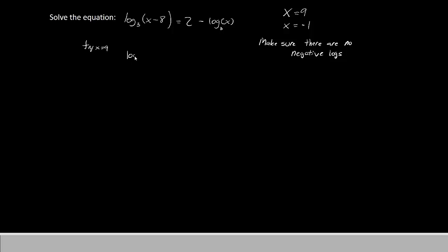So let's try 9. We'll let x equal 9. Log base 3 of 9 minus 8 equals 2 minus log base 3 of 9. If we simplify this, we'll have log base 3 of 1 equals 2 minus log base 3 of 9. You could continue to simplify this if you desire, but in most cases, it's enough to know that there are no negatives inside the log. So I don't see any negative numbers inside of these logs. So x equals 9 is going to be okay.